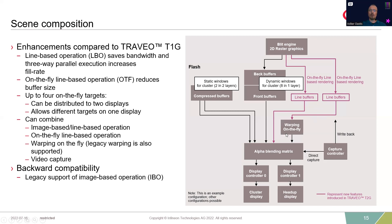We also support warping on the fly. In a head-up display, you project normally onto a curved windshield, which means your normal picture will be distorted by the curvature of the windshield. Therefore the image is corrected by the warping functionality so that it appears in the right shape when you look at it.